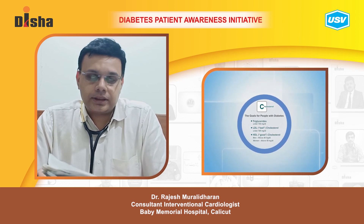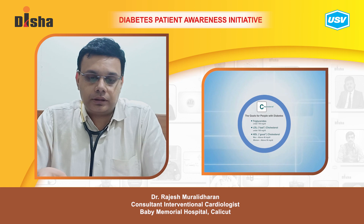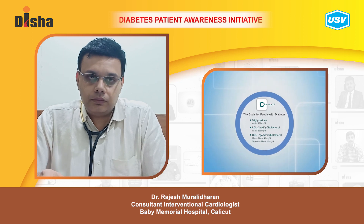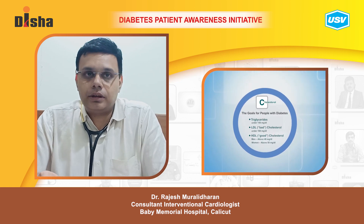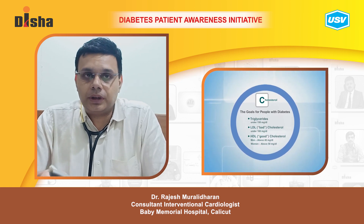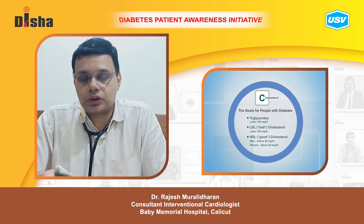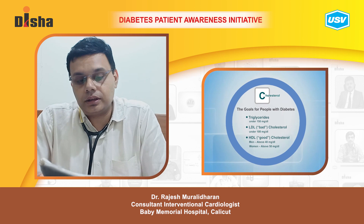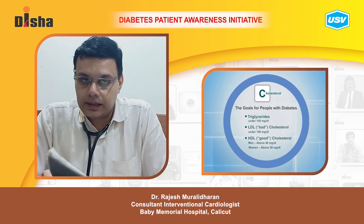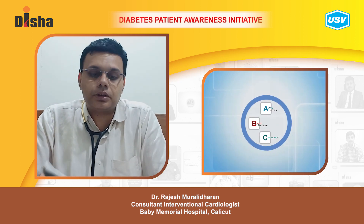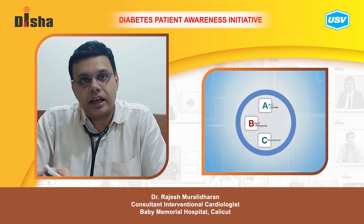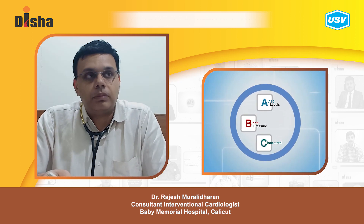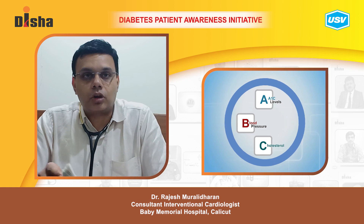Triglycerides are usually high in patients with diabetes and they also need to be under control — they should not be allowed to reach a very high level. So the ABCs of diabetes include A1c, blood pressure, and cholesterol.